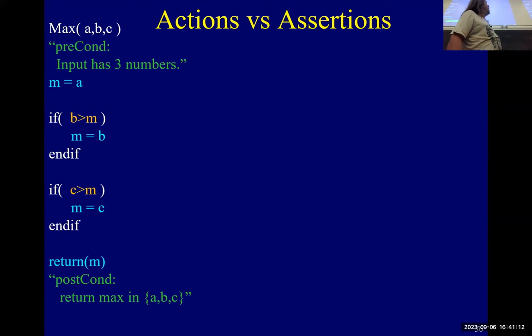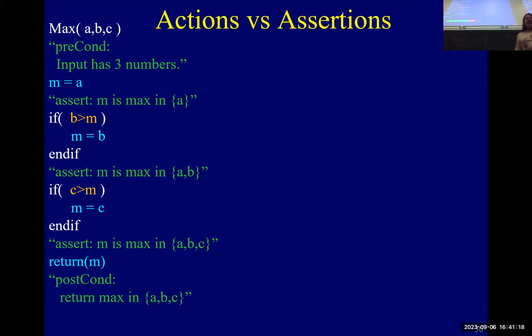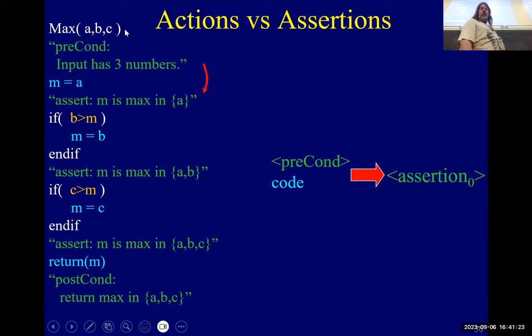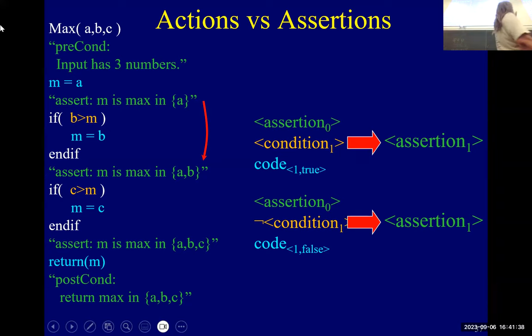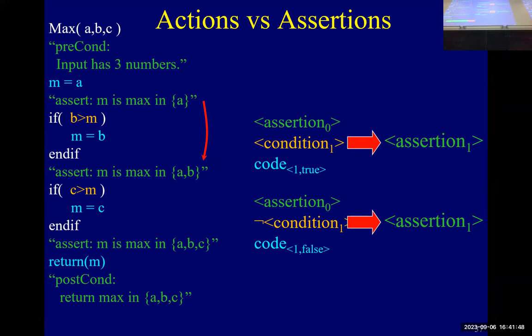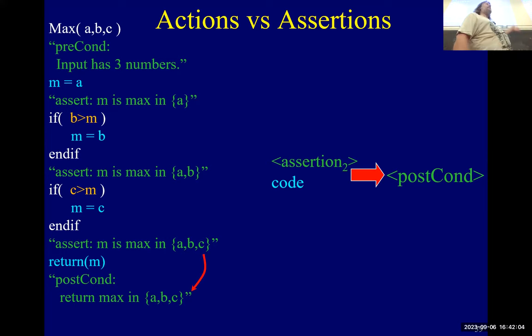Here's a really simple example: we start with three numbers, and our first assertion is that m is the maximum of the set containing only the first number. Then we prove that given m is the max of the first number, after executing the block of code — where we compare the second number and if it's bigger it becomes the new m — we get the next assertion. So that's our code.